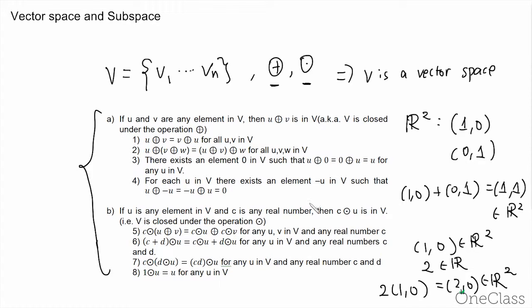So essentially, if we can find any set that has these two operations defined on the entire set, and these operations satisfy all the listed conditions, then this set can be called a vector space. On the other hand, if any of these conditions — say condition 1 or 2 — is violated by any set, then this set cannot be called a vector space.